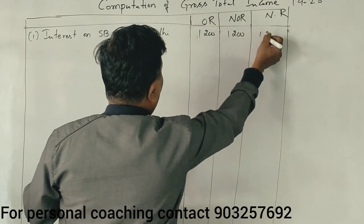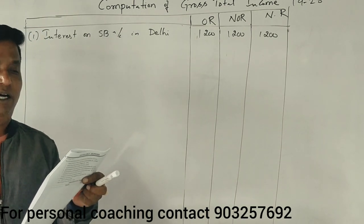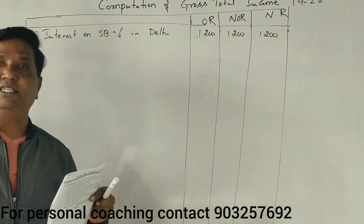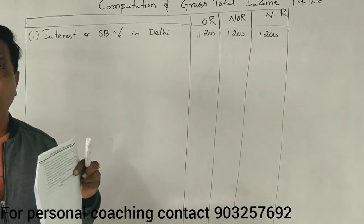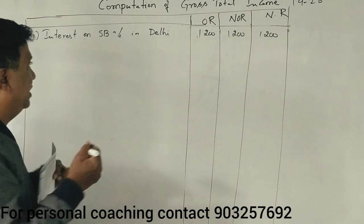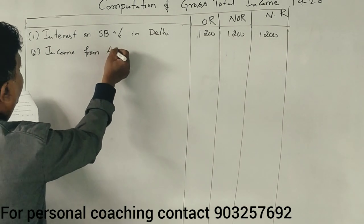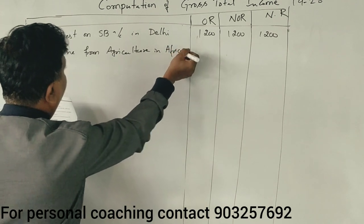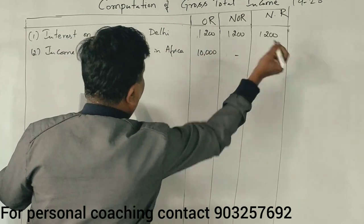Next point: income from agriculture in Africa, invested in Nepal. Agriculture income earned in Africa — that is what you receive from Africa, received from Nepal. In India, first case tax model. Income from agriculture in Africa: ₹10,000, only in the first case.